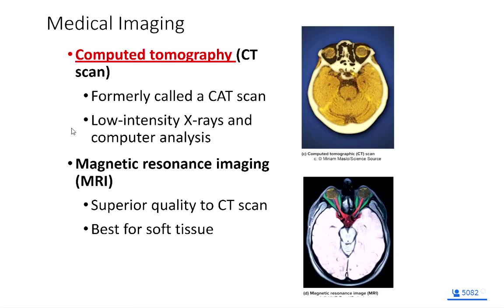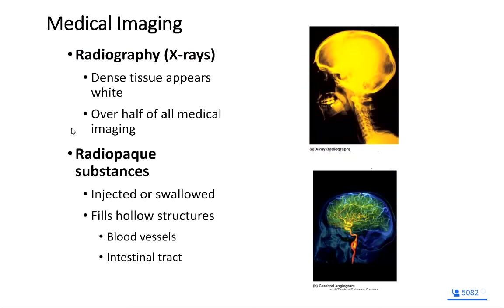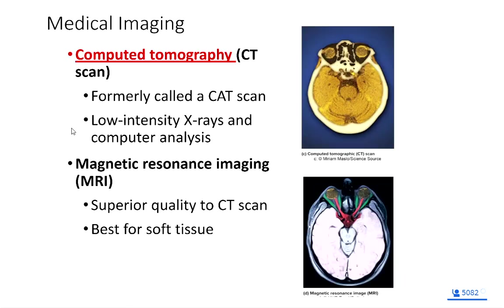We could take lots and lots of X-rays — and that's called a CT scan, or computed tomography scan. This involves many low-intensity X-rays taken in slices that we can stack on top of each other and view the inside of the human body.